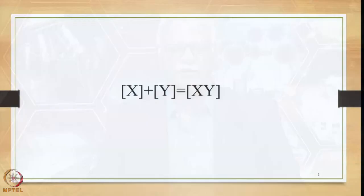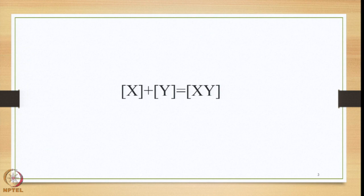The features of the Bahuvrihi Samasa can be explained in brief in the form of this equation, where we have x and y put in square brackets, thereby indicating that they are different independent entities in terms of word form, meaning, and accent. There is a plus sign which indicates that they are semantically related and hence the speaker of Sanskrit decides to merge them together. The output generated is xy, which is one unit. This xy has got three features, namely Aikarthya or Ekarathata, Aikapadya or Ekapadata, and Aikaswarya or Ekaswarata.